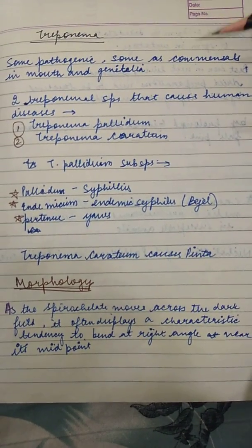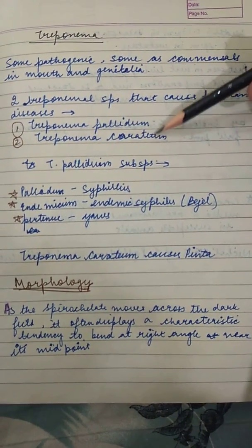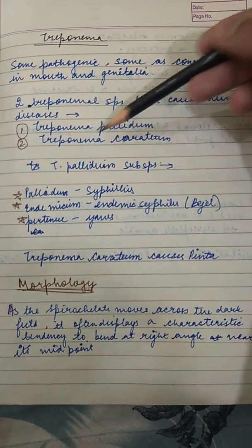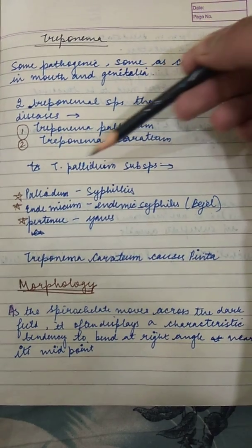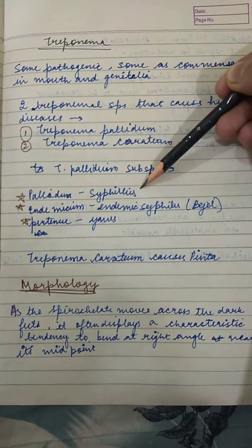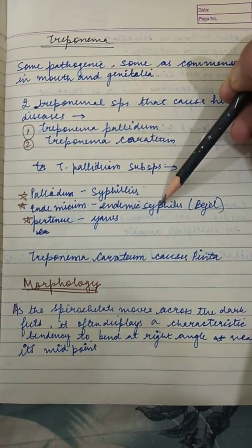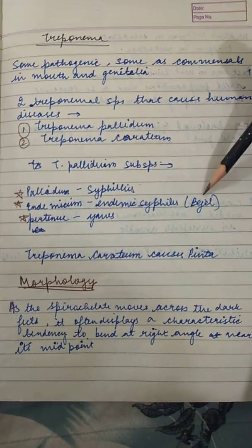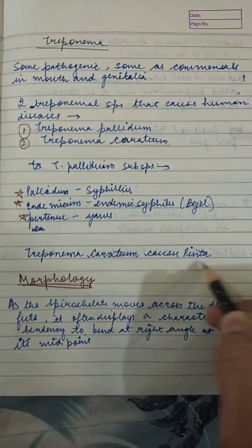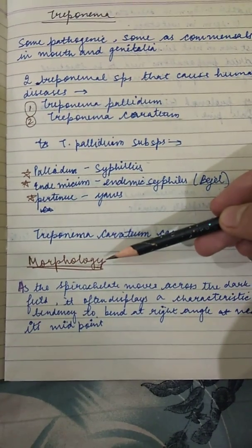Treponema includes pathogenic microorganisms; some are also present in the mouth and genitalia as commensal flora. The species causing human diseases are Treponema pallidum and Treponema carateum. Treponema pallidum subspecies include pallidum, which causes syphilis; endemicum, which causes endemic syphilis known as bejel; and pertenue, which causes yaws. Treponema carateum causes pinta.